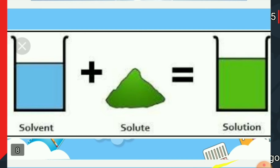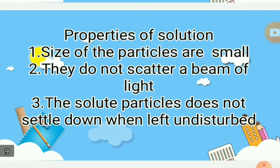What are the properties of a solution? The first property is that the particles in a solution are very small — we cannot see them with our naked eyes. We are unable to differentiate them once they get dissolved in the solvent. So the first property is: the size of the particles is very small.